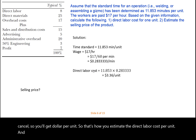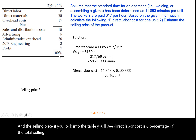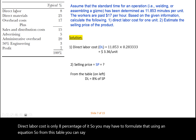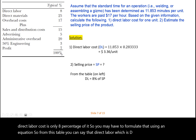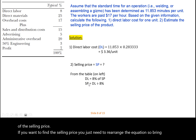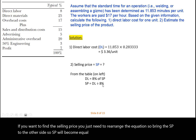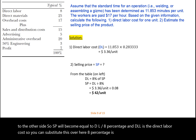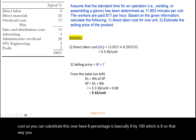For the selling price, if you look at the table you will see that direct labor cost is 8% of the total selling price. So if the selling price is 100%, the direct labor cost is only 8% of it. That means DL = 8% × SP. To find the selling price, rearrange the equation: SP = DL ÷ 0.08. Substitute the direct labor cost value and that gives you the selling price of the product.